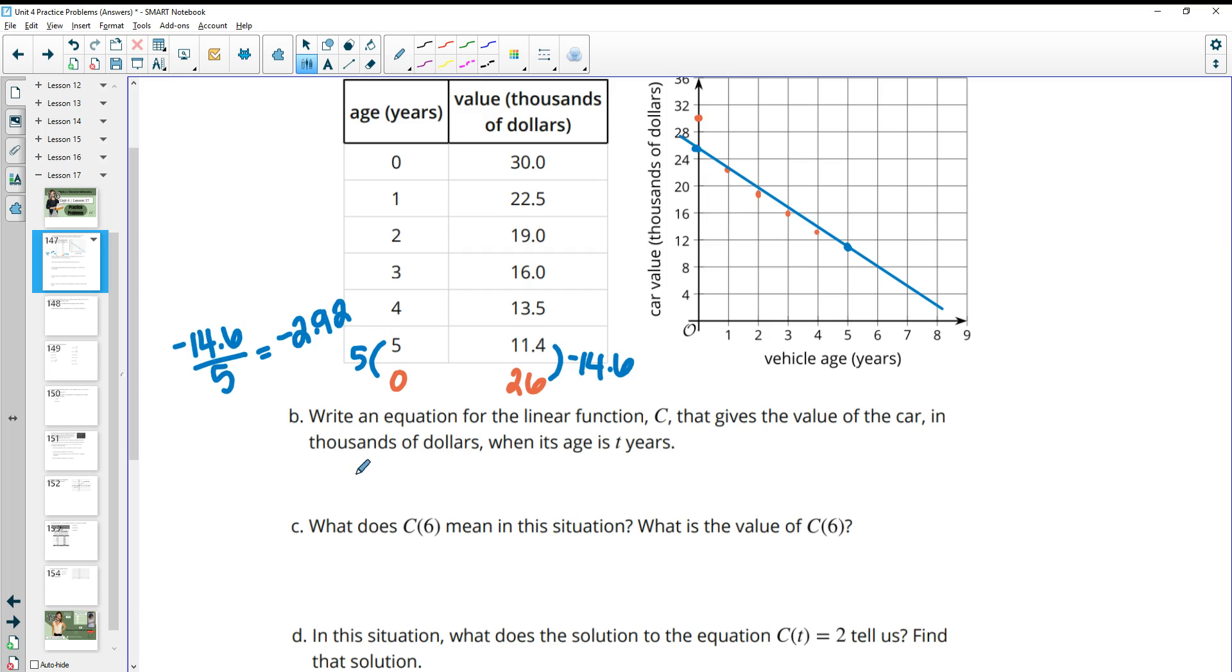So when you write your equation of your line, so the cost of my car after a certain number of years, it's going to decrease by 2.92 thousand per year with a starting value of 26 thousand. So I've got my starting value there at 26.